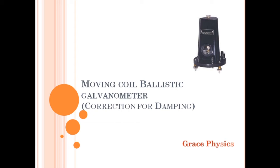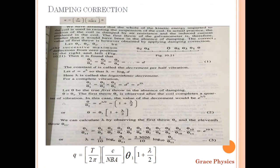So the first deflection will be smaller than what it would have been in the absence of damping. The first throw of the galvanometer is smaller than it would have been in the absence of damping. Damping is not the same as the deflection — the deflection is smaller.